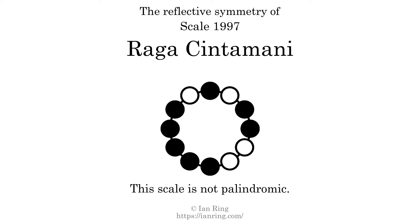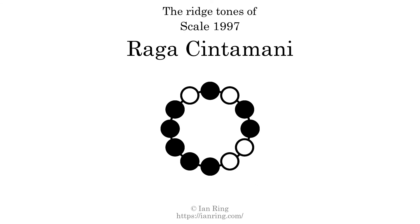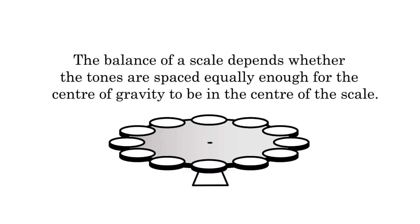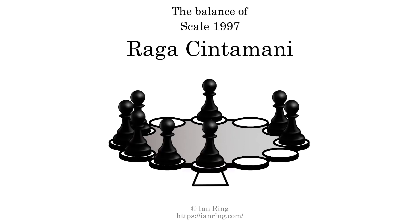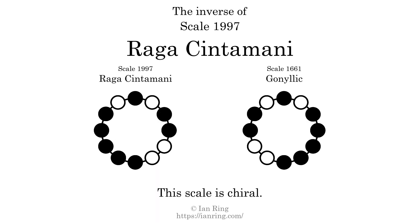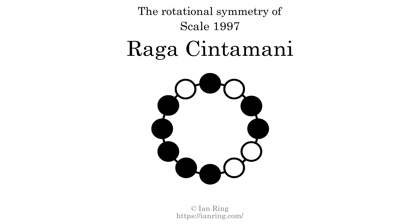This scale has no reflective symmetry. This scale has a different pattern of intervals ascending and descending, so it is not palindromic. This scale has no ridgetones and is not balanced. The inverse of this scale is scale 1661, also known as Gnilic. This scale is chiral — it cannot transform into its inverse by rotational transformation. This scale has no rotational symmetry.